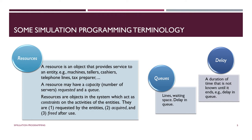A queue is a waiting line — it's a place where entities go when they are delayed and have to wait for whatever activity they're trying to do in the system. A delay is a time period during which nothing happens, or it could also be the entire time an entity spends in the system doing things and not doing things.